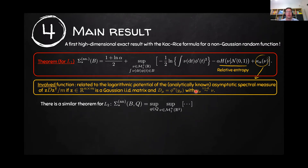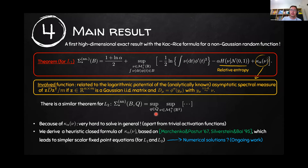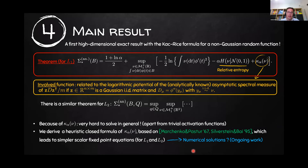We also have a similar result for the case of L2 — the squared loss of the generalized linear model — though it's more involved to write in full. Because the function kappa-alpha is very involved in general, apart from some trivial cases it's impossible, as far as we know, to solve this problem analytically. However, we derived heuristic calculations to simplify the expression, based on the work of Marchenko and Pastur, leading to simpler scalar fixed-point equations — an extremization problem over a finite number of scalar variables that can be numerically solved. This is ongoing work.